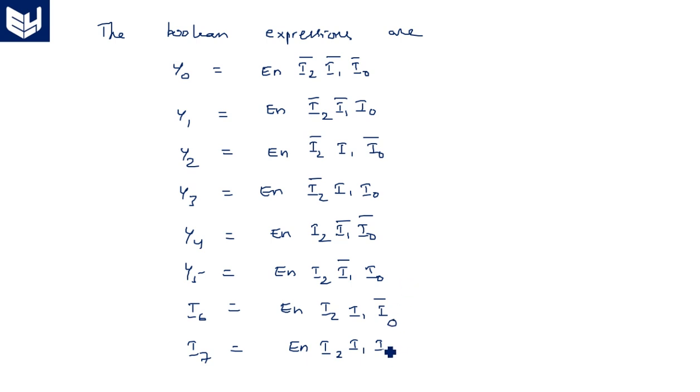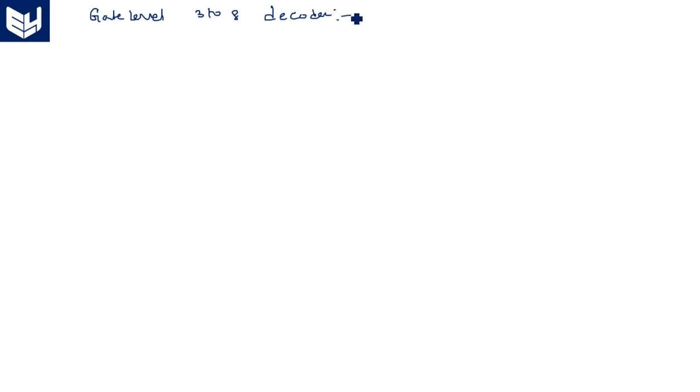Now we can draw the logic diagram using gates. The gates needed are NOT gates and 4-input AND gates — that is all. Using these, we can build the gate-level 3-to-8 decoder. To get this gate-level diagram, you should first be able to write the Boolean expressions as shown in the previous slide.